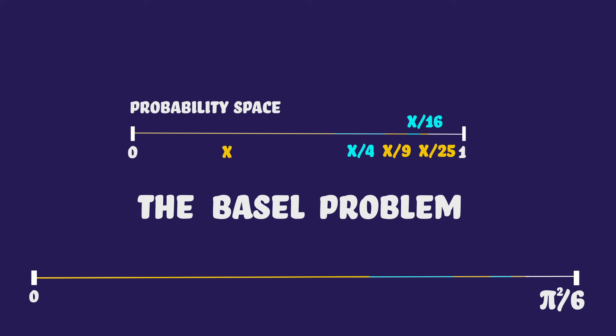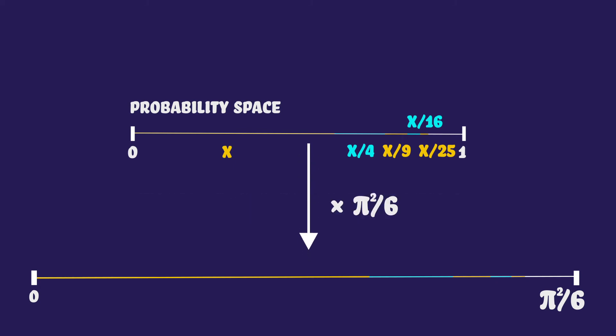Anyway, we know that the length of the original line was 1 and now the line is pi squared over 6. So the scaling factor must have been pi squared over 6. Now we know that to go from 1 on the second line to x on the first line, we need to scale by the inverse of that. So 6 divided by pi squared.